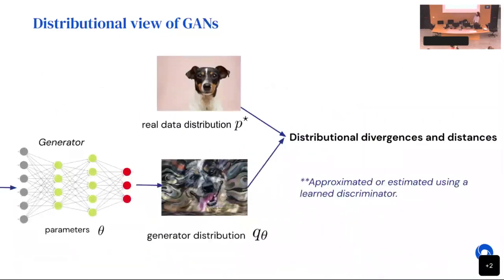Q: What advantage does the Wasserstein distance bring compared to divergences? A: Different divergences and distances have different properties. The Wasserstein distance tends to work very well when the two distributions don't have overlapping support — I'll show an example shortly. The KL and Jensen-Shannon have a notorious problem: if the two distributions don't have overlapping support, they provide no learning signal. If the model is here and the data is there with bounded, non-overlapping support, the KL goes to infinity and you can't move the model closer to the data.